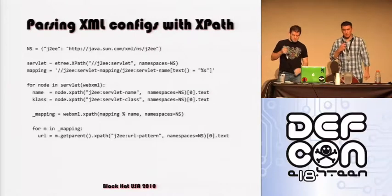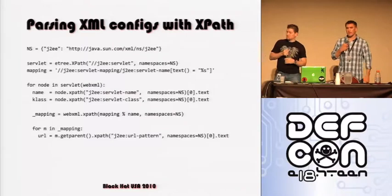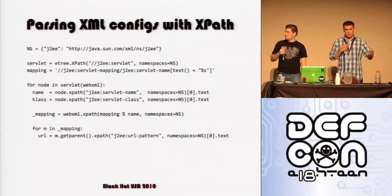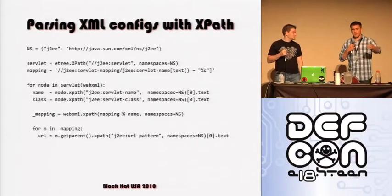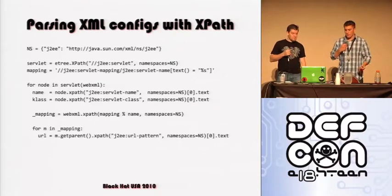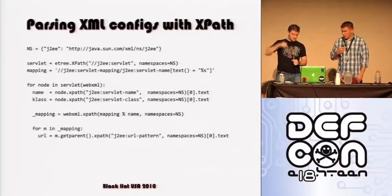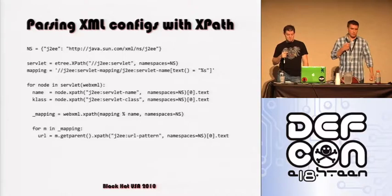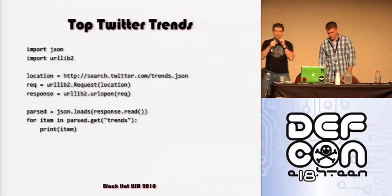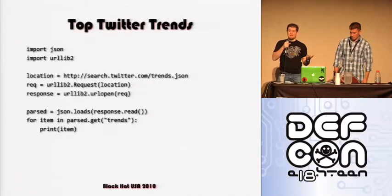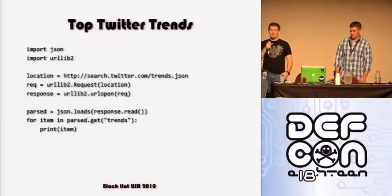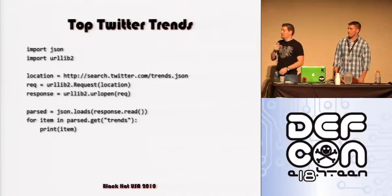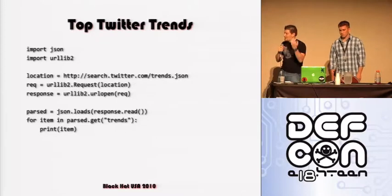One thing I find useful is parsing XML configurations. When I do code reviews, I parse out web.xml files and get a list of all the servlet classes and URL patterns to map what I've reviewed and what I've still got to review. This uses XPath expressions to get various XML nodes. JSON is also very popular and maps directly to Python types — a JSON object is a Python dictionary, a JSON array is a Python list. JSON is built into the standard library as of Python 2.6. In just a couple lines of code, you can go out to Twitter, grab all the current trends, and print them out.